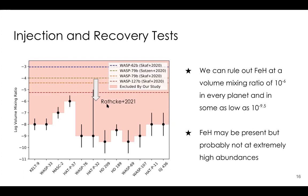A recent paper by Rathcke looking at WASP-79 showed that including opacity from H⁻ significantly decreases the inferred iron hydride abundance and provides a better fit. By including this important continuum opacity source, the low-resolution and high-resolution results are starting to become consistent with each other.